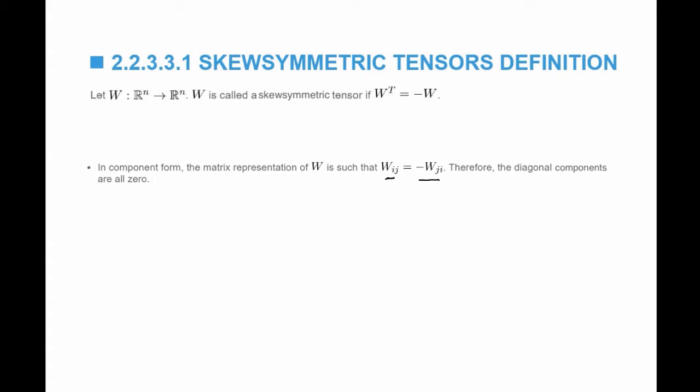Because WIJ is equal to negative WJI, therefore the diagonal components have to be all zero. Because if I put I and J equal, for example I and J equal to 1, I'm going to get W11 is equal to negative W11, which means that 2W11 has to be equal to zero, which means W11 is equal to zero.